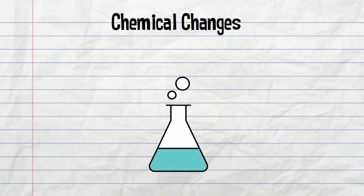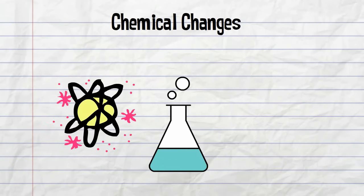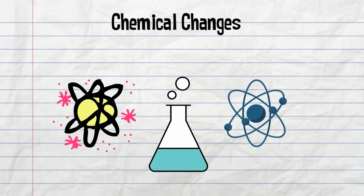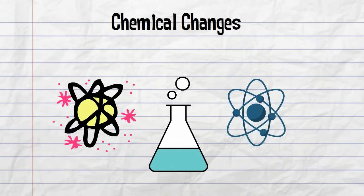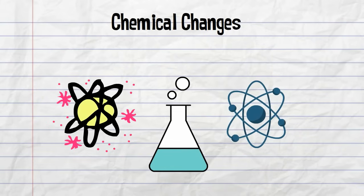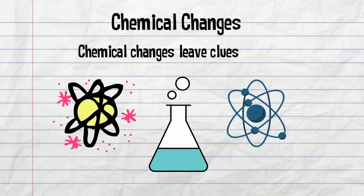Chemical changes, on the other hand, create a new substance. They involve breaking or making chemical bonds between atoms. Chemical changes leave behind clues or indicators.